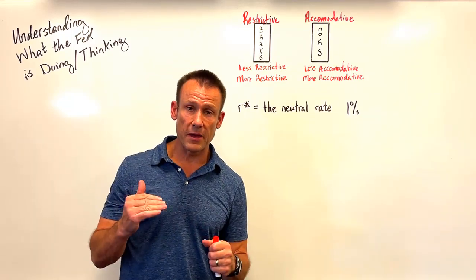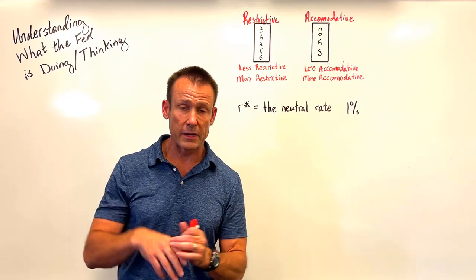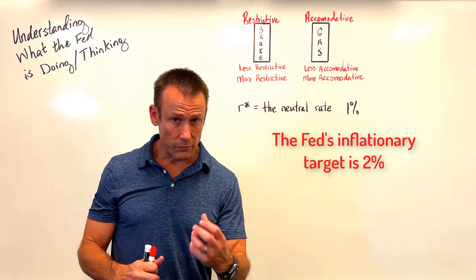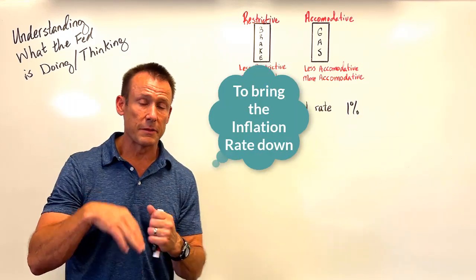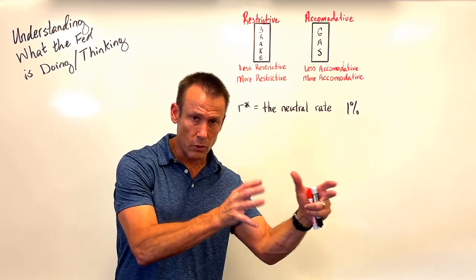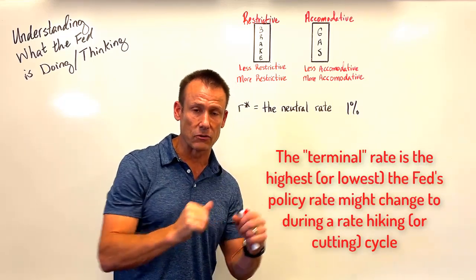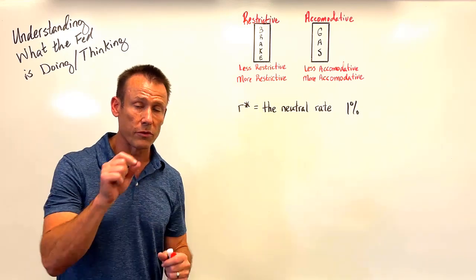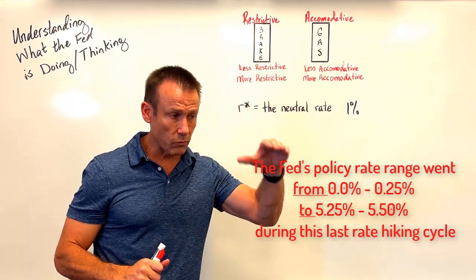Two and a half years ago, the Fed began to increase interest rates because they saw inflation as a big problem. Inflation started to tick up well above their 2% target. They began a rate hiking cycle and for about 14 months increased interest rates, getting to what we call their terminal rate — the highest they raised interest rates during this cycle — which was 5.25 to 5.5%. For this video I'll use 5.3% as the terminal rate, and that's a nominal interest rate.